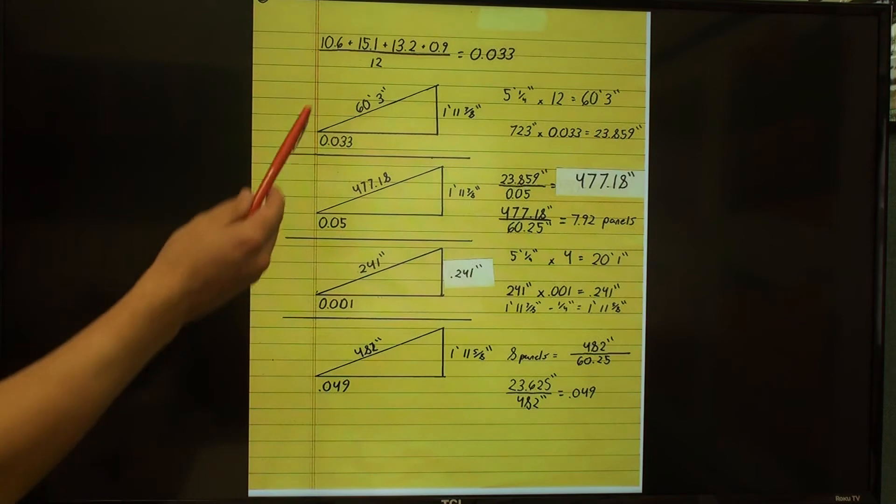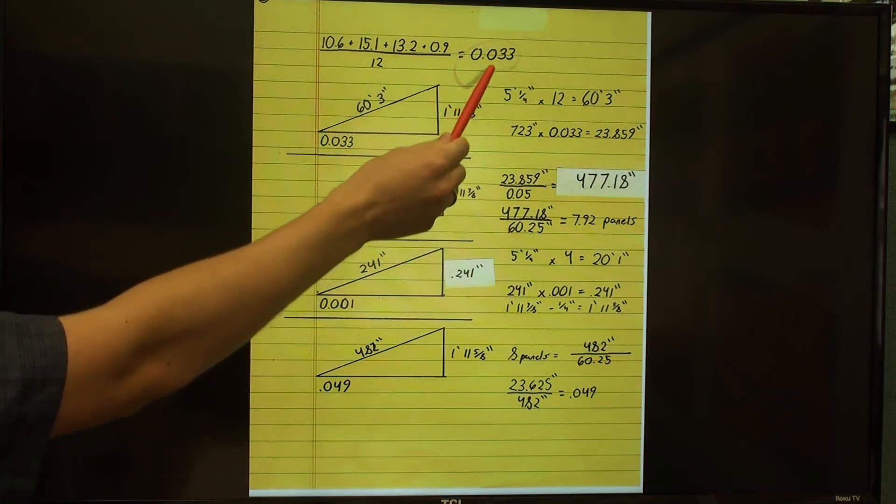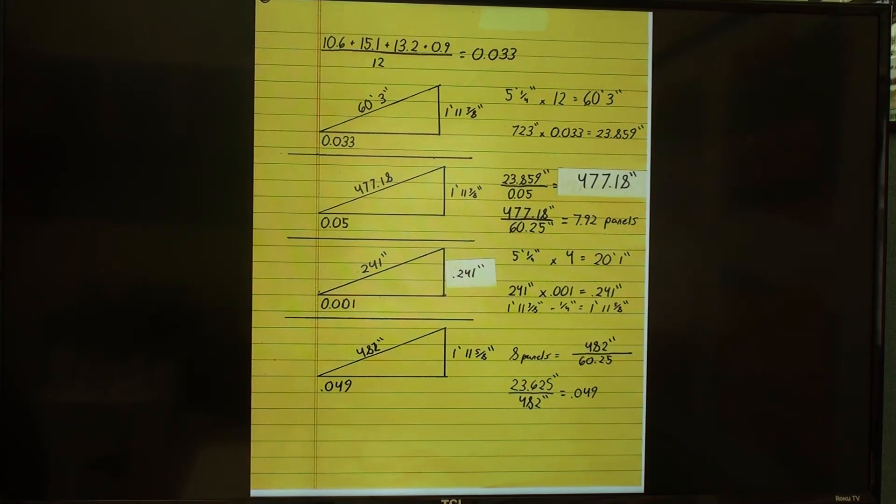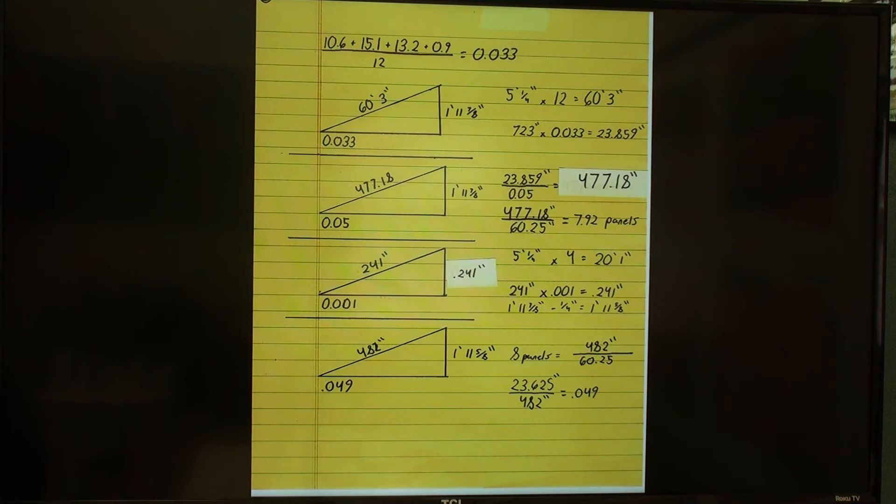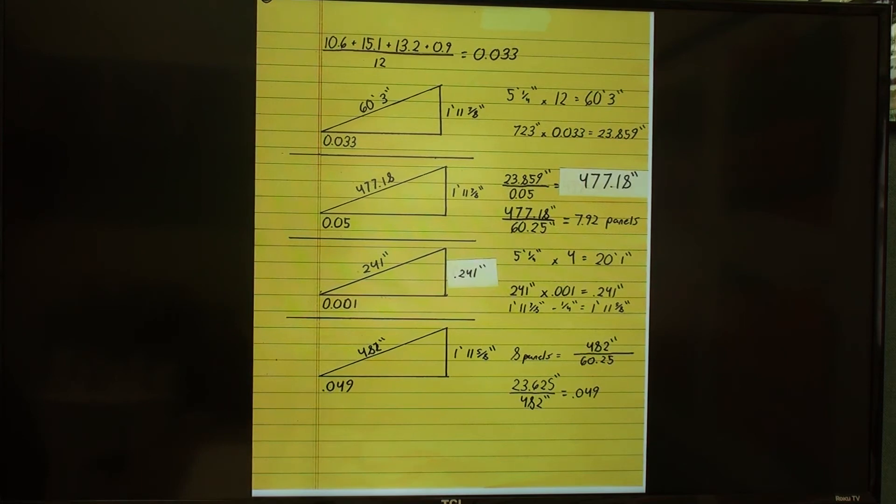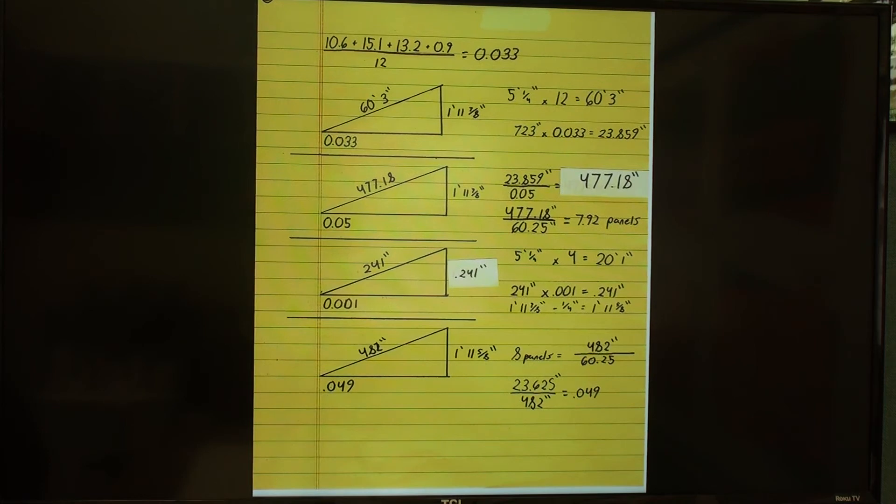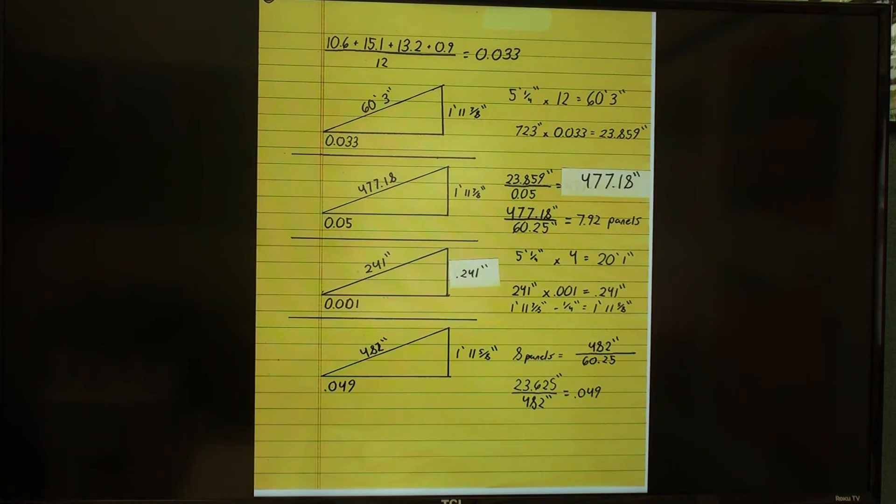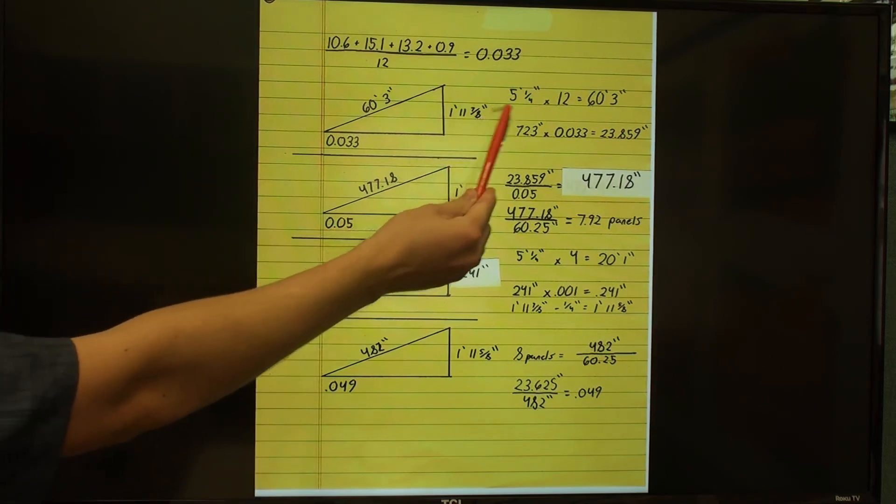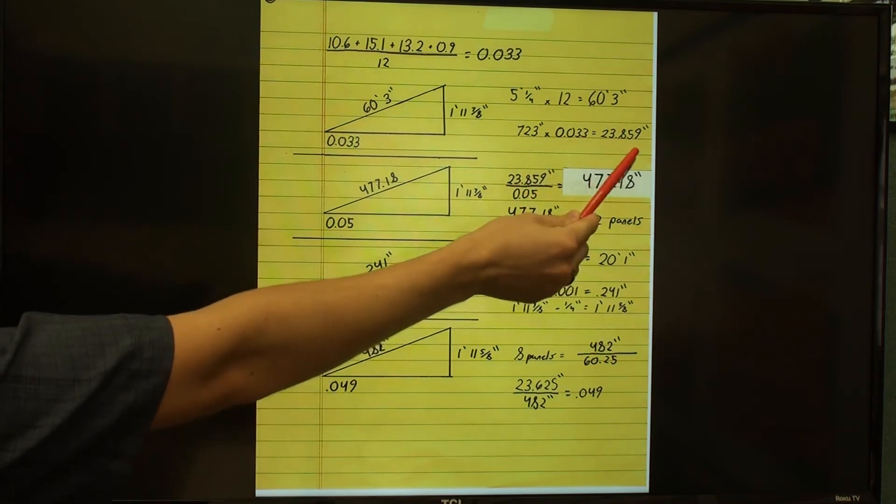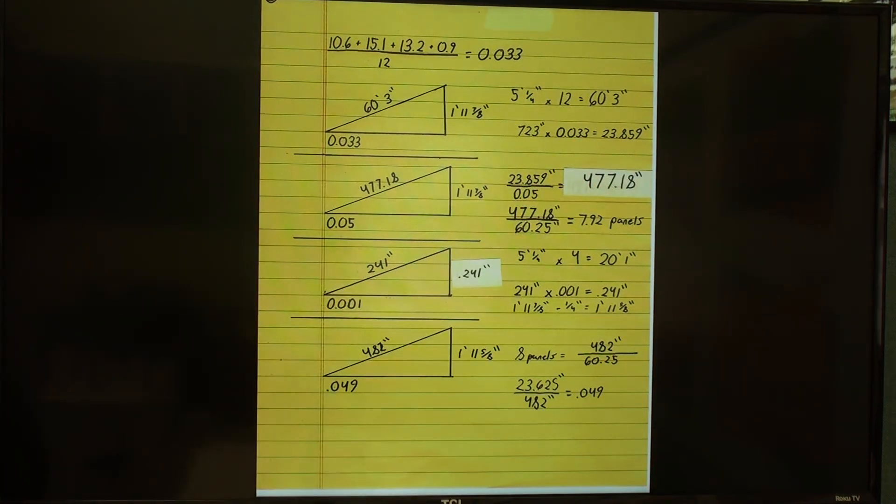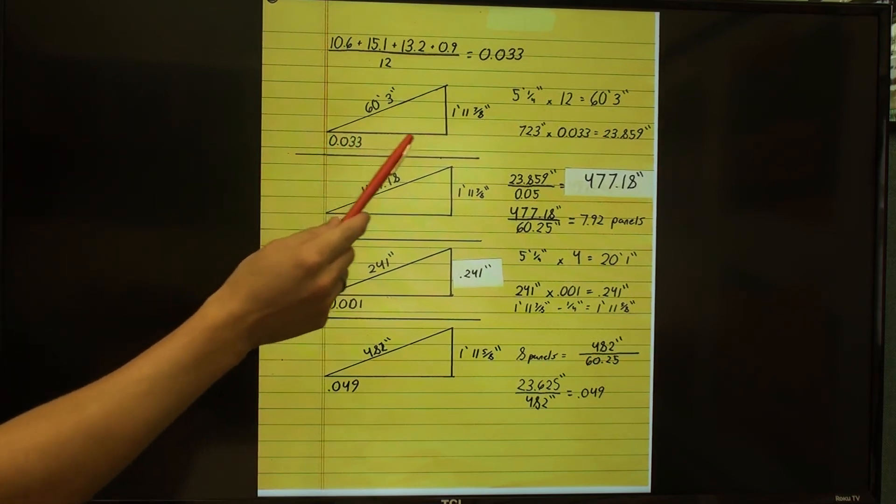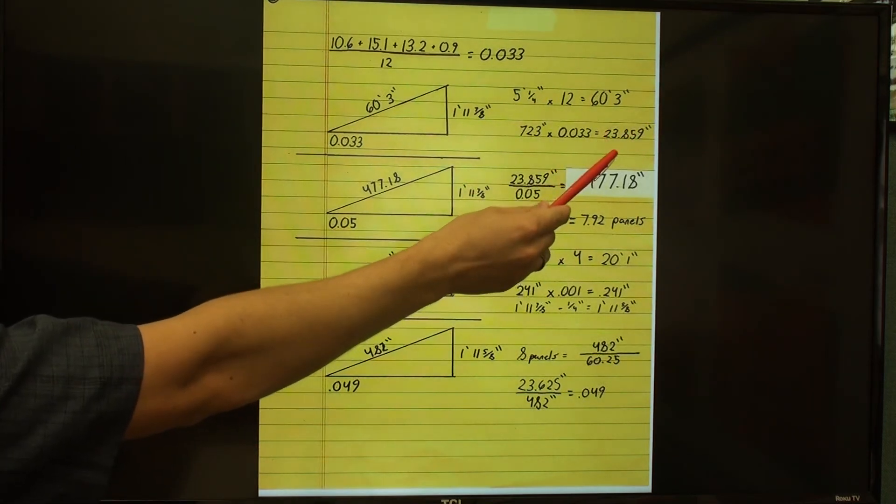If we start by calculating the average slope, we can determine that replacing the entire length of the sidewalk would give us a slope of 3.3%. But it's not that easy. We should try to demo as few panels as we can to create a sloped sidewalk. We can still use the average slope, however, to calculate the elevation we are going to be working with. Here, I've determined that the length of a panel times the 12 panels on the path equals 723 inches, which is then multiplied by our average slope to get a total elevation of 23.859 inches.